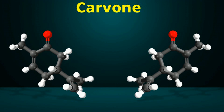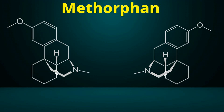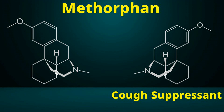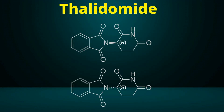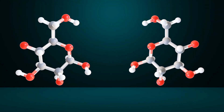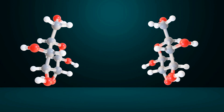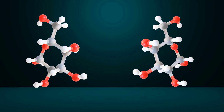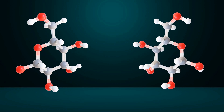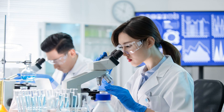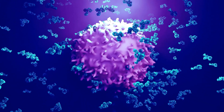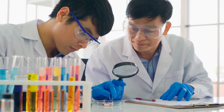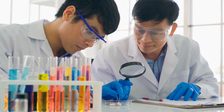For instance, consider carvone, a compound where the right-handed molecule smells like mint, while the left-handed molecule smells like caraway seeds. Similarly, methorphan has two versions: the right-handed molecule acts as a cough suppressant, while the left-handed molecule is a sedative. Another example is thalidomide — one version was used as a medicine for morning sickness, but its mirror image caused severe genetic disorders in unborn children. In many situations, there is a need to produce only one specific version of such a molecule, and this necessity is what initially led to these experiments.